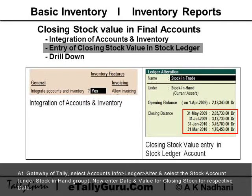To enter the closing stock value in the stock ledger, at Gateway of Tally, select Accounts Info, Ledger, Alter, and select the stock account under the 'Stock in Hand' group. Now enter the date and value for closing stock for the respective date.